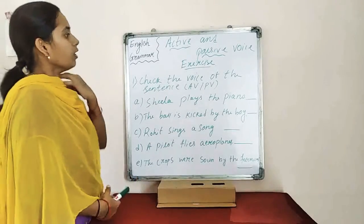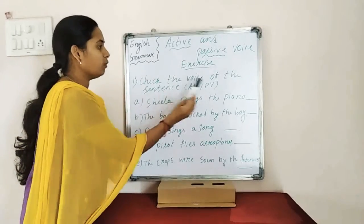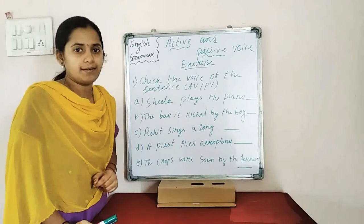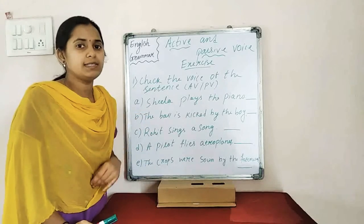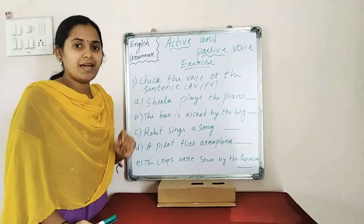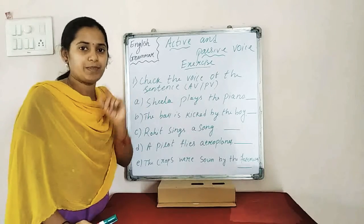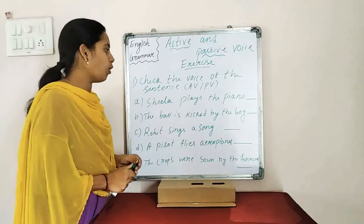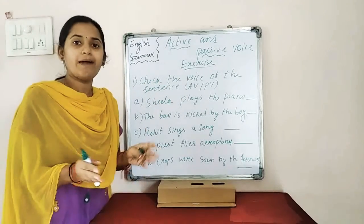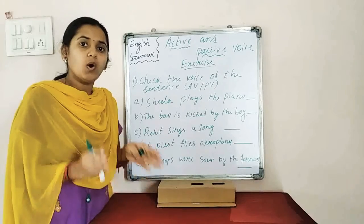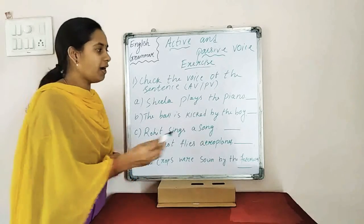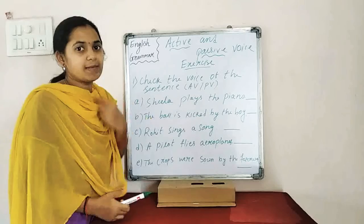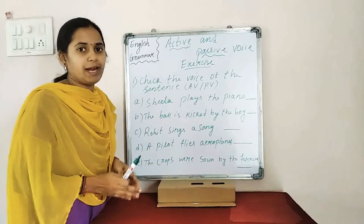So let's start the exercise. The first task is to check the voice of the sentences — that means some sentences are given and you have to write whether each sentence is in active voice or passive voice. Since space is limited, I am writing active voice as A-V and passive voice as P-V. So after each sentence, you have to write A-V if it is in active voice, or P-V if it is in passive voice.